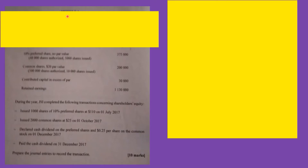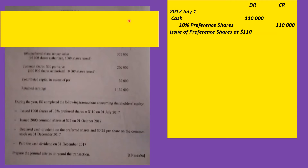Transaction 1: Issued 1,000 shares of 10% preferred shares at $110 on July 1, 2017. Let me make the general entry for that. July 1st — since there is no par value, the cash received is $110,000 (1,000 × $110), and we put all of it into the share capital account since there is no par value.